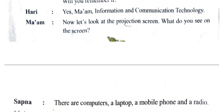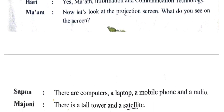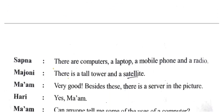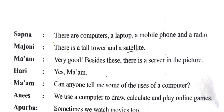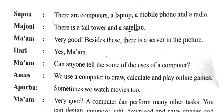What do you see? There are computers, a laptop, a mobile phone and a radio. This is a computer, a laptop, a mobile phone and a radio. There is a tall tower and a satellite.